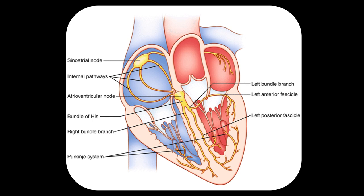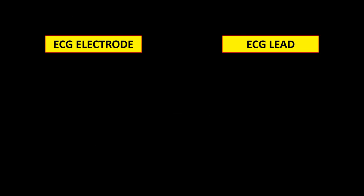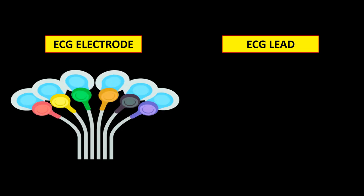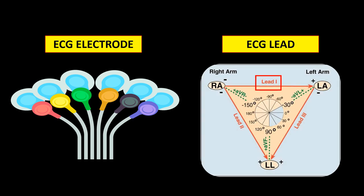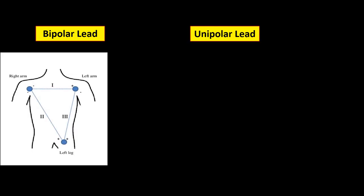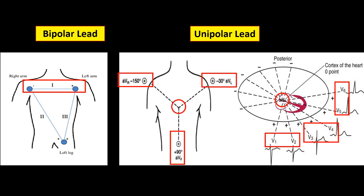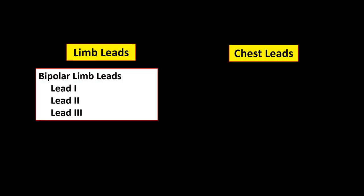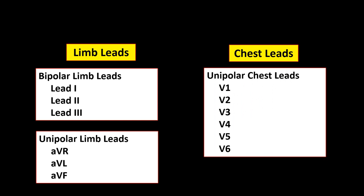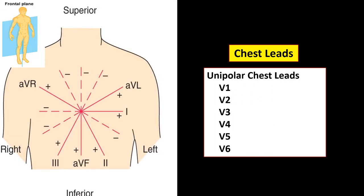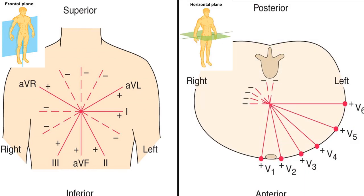We are now acquainted with the electrical conducting system of the heart. Let us proceed to ECG leads. An electrode is the actual conductive pad attached to the body surface area, while a lead is the electrical potential difference between a positive electrode and a negative electrode or a reference point. An ECG lead can either be bipolar or unipolar. A bipolar lead is composed of two electrodes of opposite polarity — one positive and one negative — while a unipolar lead is composed of one positive surface electrode and a reference point. A standard 12-lead ECG is composed of three bipolar limb leads, three unipolar limb leads, and six unipolar chest leads. The six limb leads record potentials transmitted onto the frontal plane, while the six chest leads record potentials transmitted onto the horizontal plane.